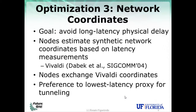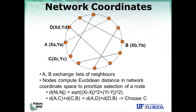This builds upon related work — the Vivaldi natural coordinate system — which estimates, through measurements between peer interactions, a coordinate space where each node gets an XY coordinate in this virtual space of natural coordinates. We then select nodes using latency estimates to prioritize which nodes are chosen for tunneling.